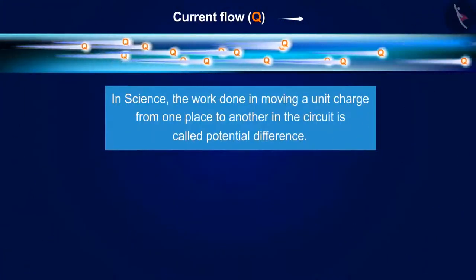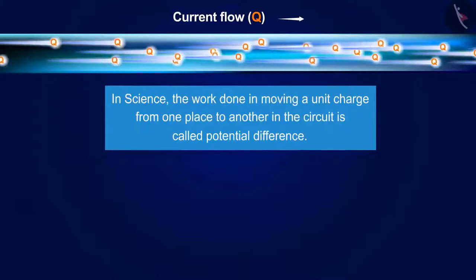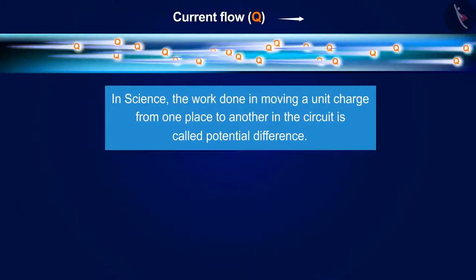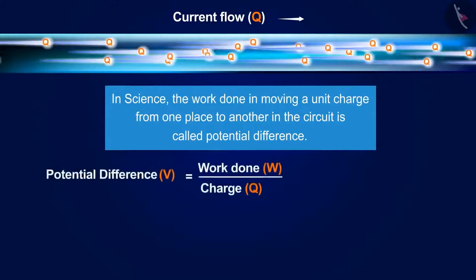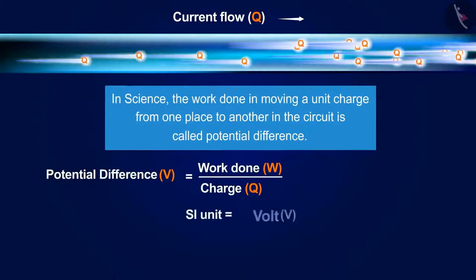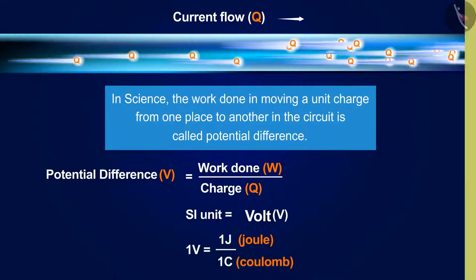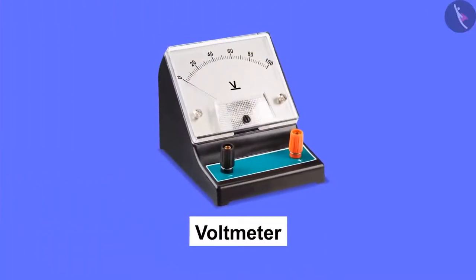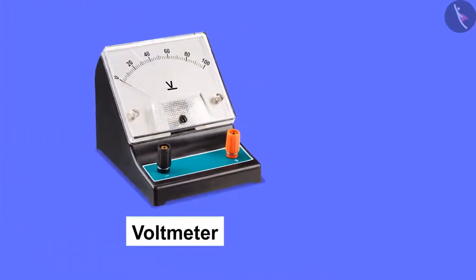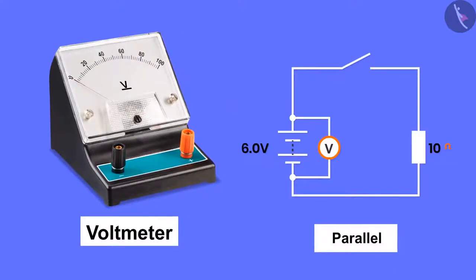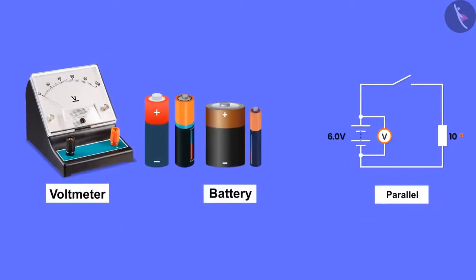We get the potential difference due to various chemical reactions of the battery. In science, the work done in moving a unit charge from one place to another in the circuit is called potential difference. It is represented by the symbol V, and its SI unit is volt. A volt is the ratio of a joule and a coulomb. The potential difference is measured with the help of a device called a voltmeter, which is always placed in parallel. Various kinds of batteries having variations in potential difference are available in the market.